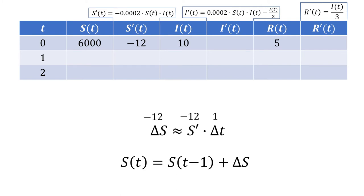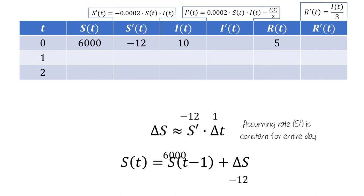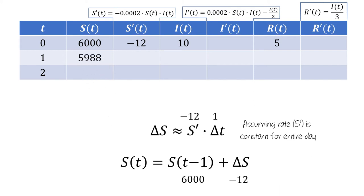We should keep in mind that this is approximate because we're assuming that the rate S' is constant for the entire day. Then we can use this change in the susceptible group along with the number of susceptible individuals at t=0 to get that there are 5,988 susceptible individuals at t equals 1.